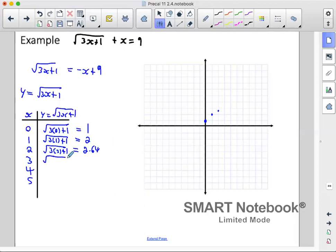Next one, we have square root of 3 times 3 plus 1. That would be square root of 10, which is 3.16. Next one, we have 3 times 4 plus 1, which gives us 13. Square root of 13 is 3.6.